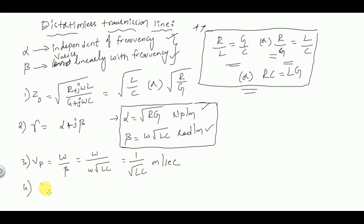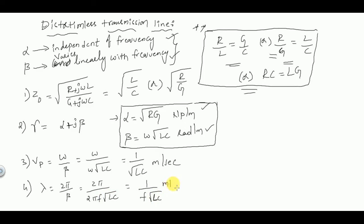The wavelength lambda equals 2π/β, which equals 2π / (2πf√(LC)), giving 1 / (f√(LC)) meters. Note that in a distortionless transmission line, alpha is not equal to 0, so there is always some attenuation present.